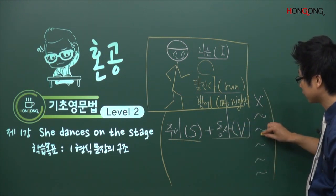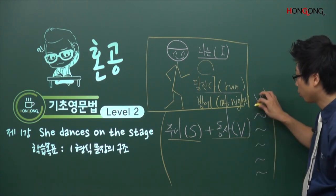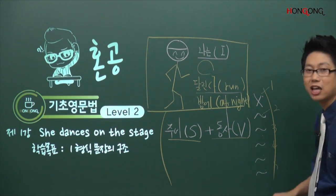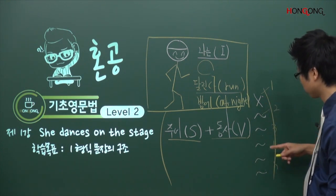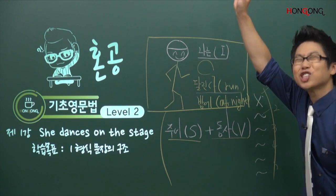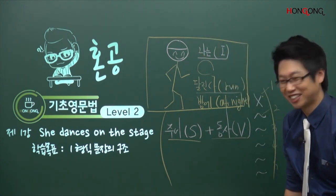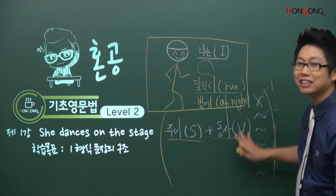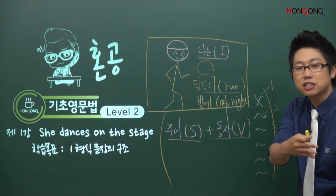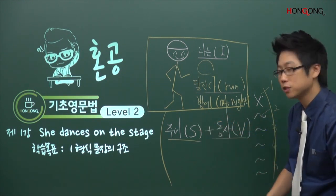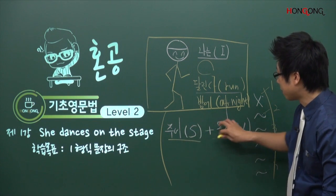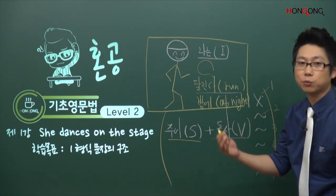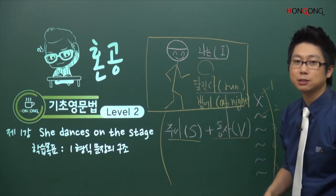뒤에 뭐가 오느냐에 따라서 분류를 하다 보니까, 일형식, 이형식, 삼형식, 사형식, 오형식으로 구조를 다섯 가지로 한 겁니다. 이걸 나누는 게 중요한 게 아니라, 이거는 학자들이 나눈 거고 시험 영어 때문에, 그리고 일제식 문법서가 그대로 들어오면서 그렇게 된 거고, 사실은 우리가 해석을 하면서 감을 잡고, 아 이게 일형식이구나 라고 매치만 시키면 끝이에요.